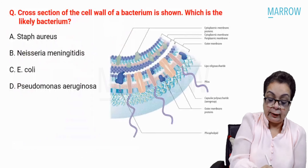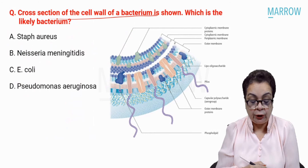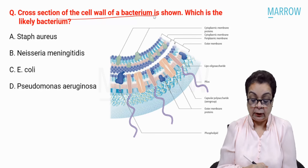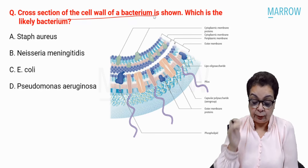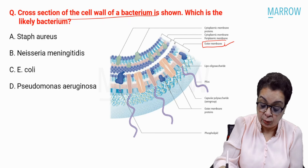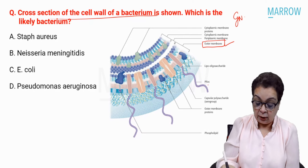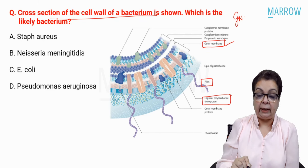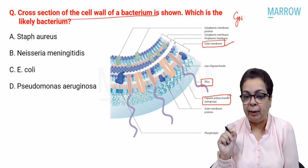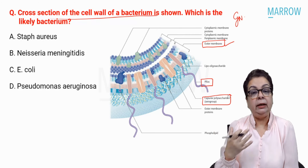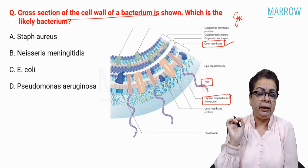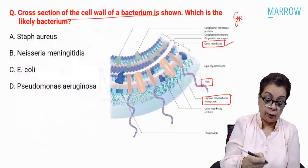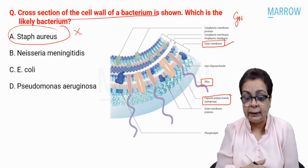Next question: cross-section of the cell wall of a bacterium is shown — which is the likely bacterium? Options are Staph aureus, Neisseria meningitidis, E. coli, and Pseudomonas aeruginosa. Looking at the figure, we see an outer membrane, confirming this is a gram-negative bacterium, further confirmed by the presence of the pilus. We also see a capsular polysaccharide — so this is a capsulated gram-negative bacterium. Staph aureus can be ruled out immediately.